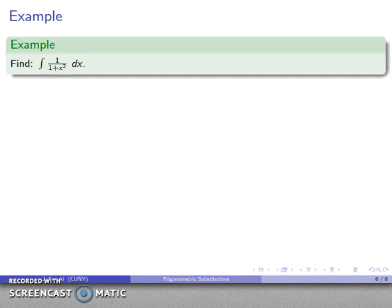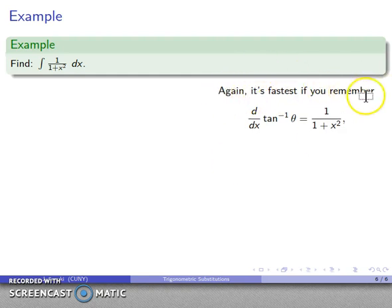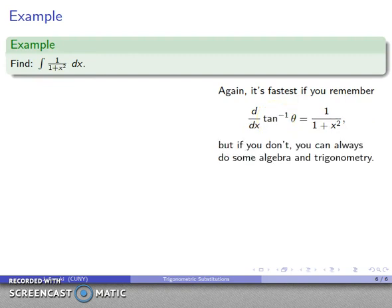Let's look at a different integral: the antiderivative of 1 over (1 plus x squared) dx. The most efficient way is to remember that this integrand is what you get when you differentiate the inverse tangent function. But if you don't remember that, you can always do some algebra and trigonometry — that's really most of mathematics. You don't have to remember things if you're willing to do a little bit of work.